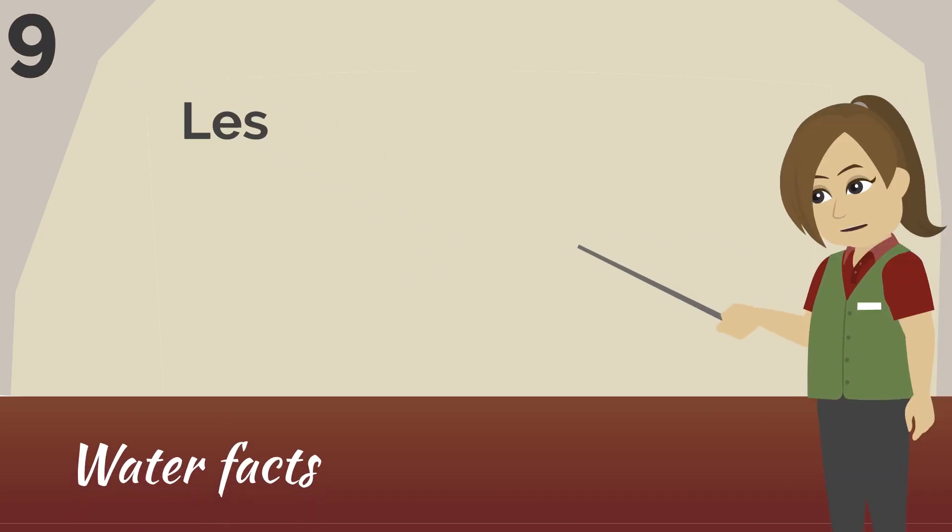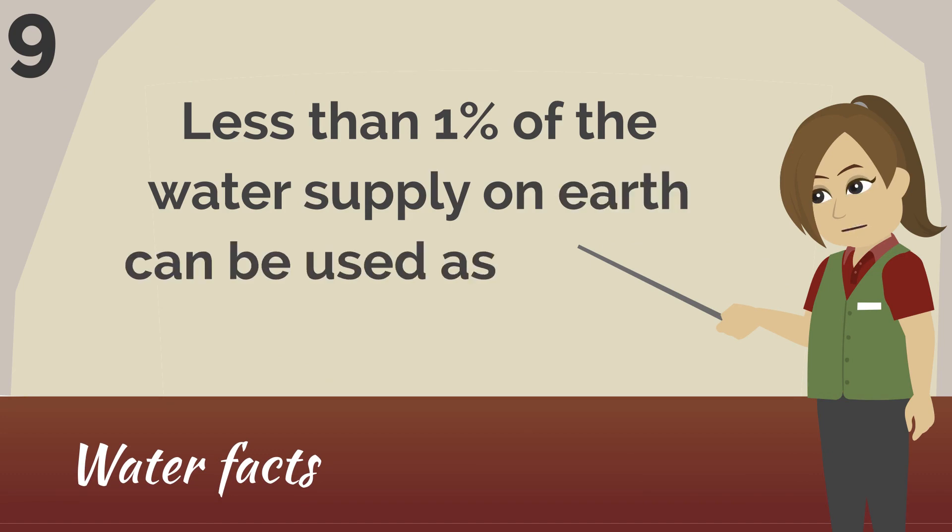Number 9. Less than 1% of the water supply on earth can be used as drinking water.